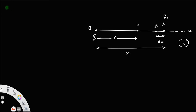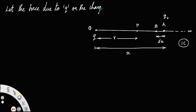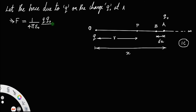Let the force due to Q on the charge Q0 at A be equal to F. F is equal to the electrostatic Coulomb's force: F = (1/4πε₀) × Q × Q0 divided by x², the distance between the two charges squared. The direction of the force will be repulsive, that is away from the charge Q, because these two are positive charges.